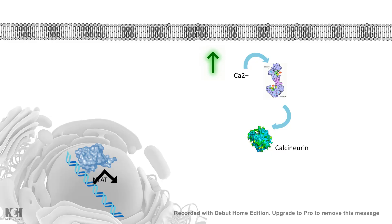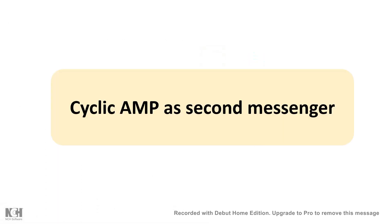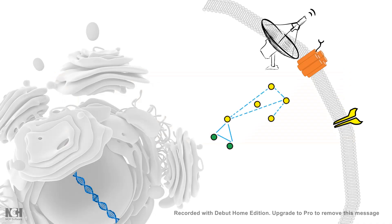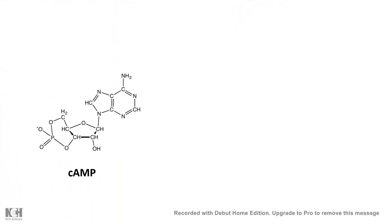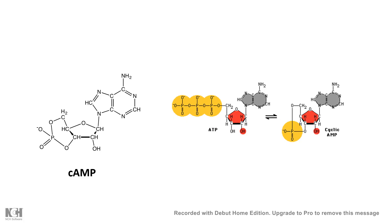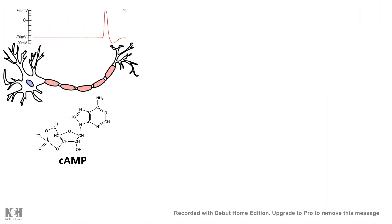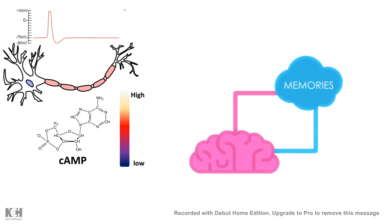Cyclic AMP is one of the earliest discovered second messengers. ATP cannot be used as a second messenger because many metabolic processes also create ATP, so it would be very hard for the cell to decode the message. Cyclic AMP is a cyclic variant of ATP, which is why it is unique and can be used as a second messenger. Neuronal activity can lead to an increase in cyclic AMP, and this is correlated with memory storage.